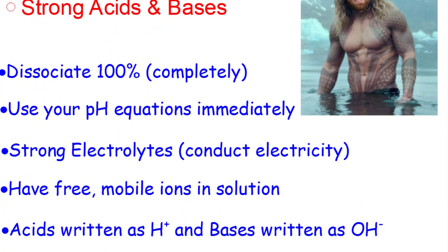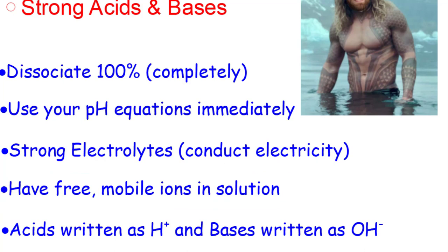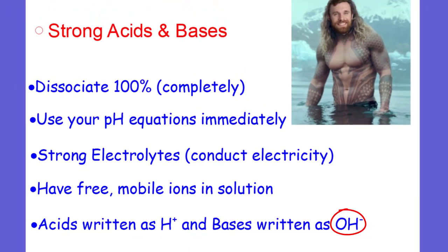Because they have free mobile ions — positives and negatives — and what we've learned is that positives and negatives in a solution are able to conduct electricity. You don't have to memorize strong acids and strong bases in terms of their chemical formulas. You just have to recognize a strong acid and write it as H+, a proton, or a base as OH-, hydroxide.